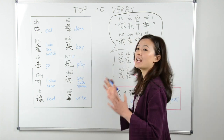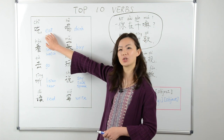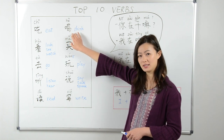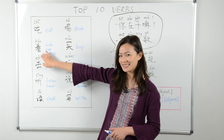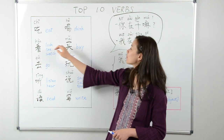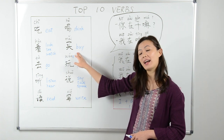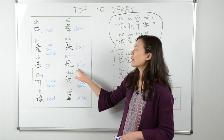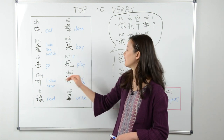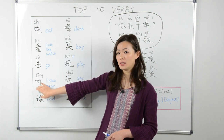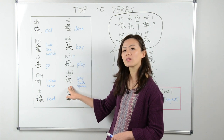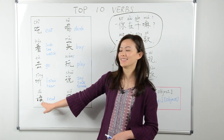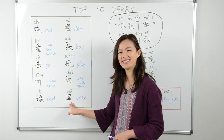Now let's go over the ten verbs one more time: 吃 — eat; 喝 — drink; 看 — look; 买 — buy; 去 — go; 玩 — play; 听 — listen; 说 — speak; 读 — read; 写 — write.